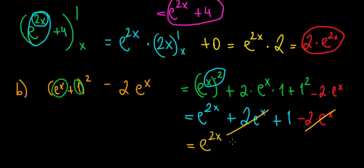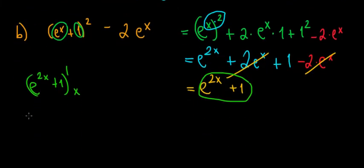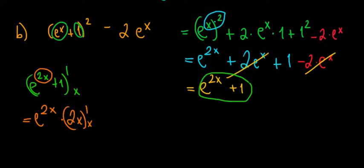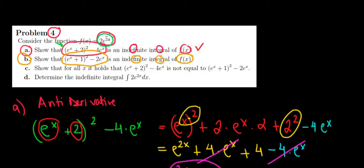What we're left with is e to the power of 2x plus 1. Now we differentiate this antiderivative to verify we return to the original function. The derivative of e to the power of 2x plus 1 with respect to x: using the chain rule, it's e to the power of 2x times the derivative of 2x, which is 2, plus the derivative of 1 which is 0. So the result is 2 times e to the power of 2x — that is the original function f of x.